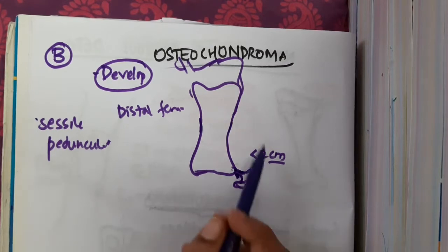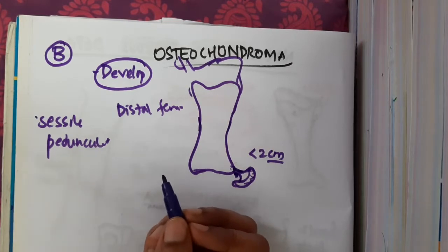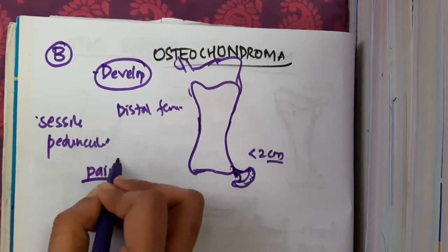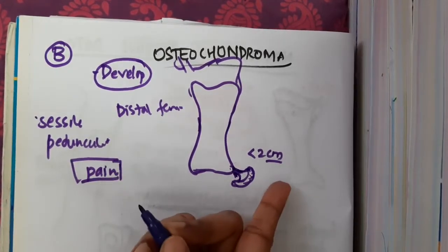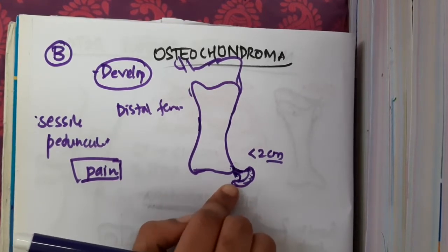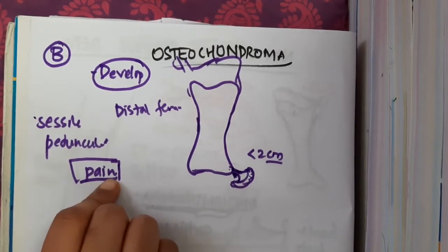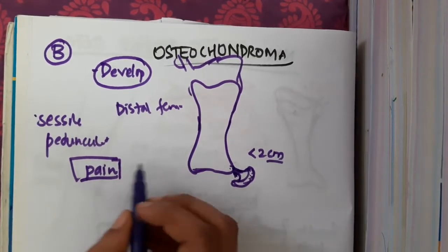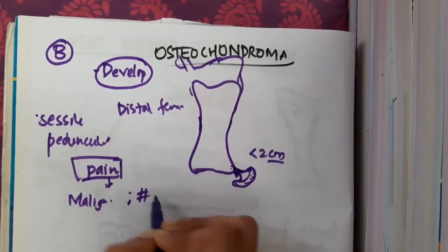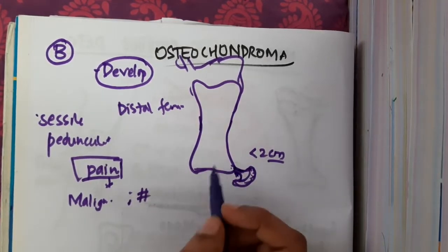Osteochondroma progresses slowly and at a certain point the patient may develop pain. In the beginning osteochondroma is a painless lesion, but sometimes it becomes painful. The causes for this conversion include malignancy or pathological fractures occurring in the bone.